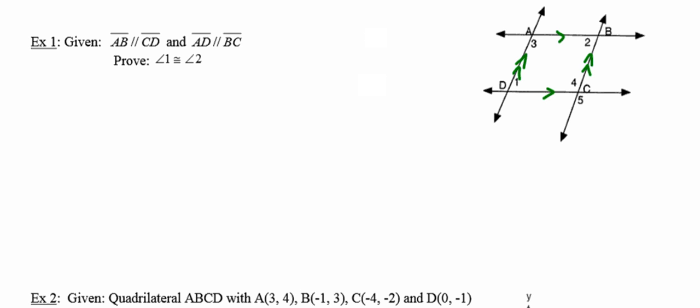By virtue of reason number one on that list, we've got the top side parallel to the bottom side and the left side parallel to the right side. So we've got a quadrilateral where both pairs of opposite sides are parallel. In other words, quadrilateral ABCD is a parallelogram.